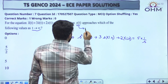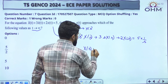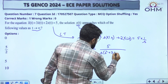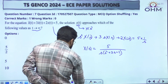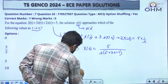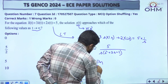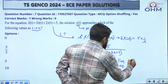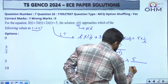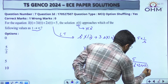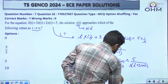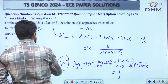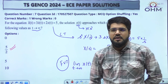From the Laplace transform equation, X(s) equals 5 divided by s(s² + 3s + 2). The final value theorem states that x(t) as t tends to infinity equals the limit as s tends to zero of s·X(s). Substituting, s and s cancel, and putting s equal to zero leaves only 5 divided by 2. So applying the Laplace transform and the final value theorem, the correct answer is 5/2, option number B.